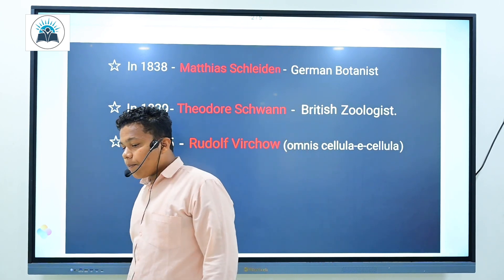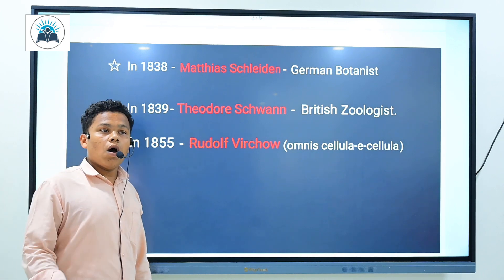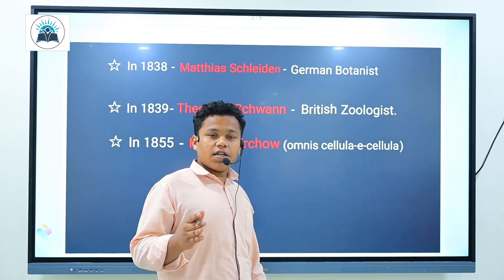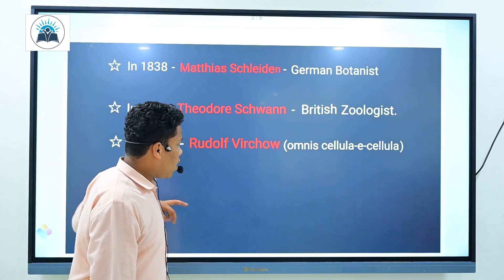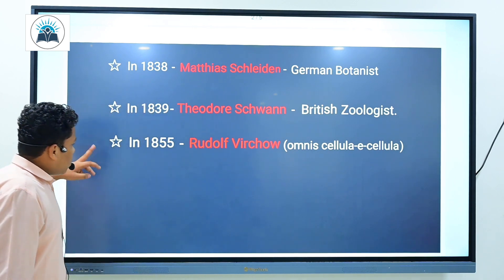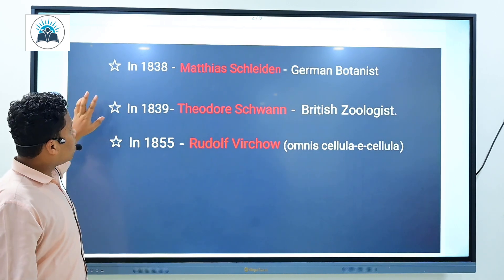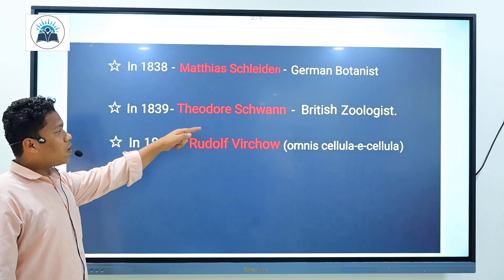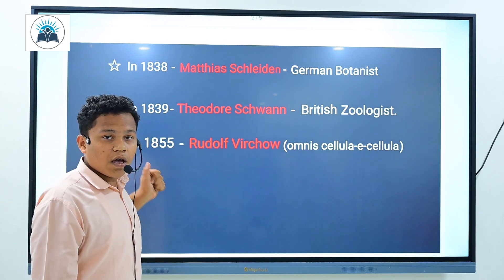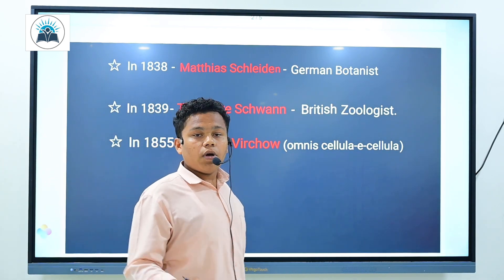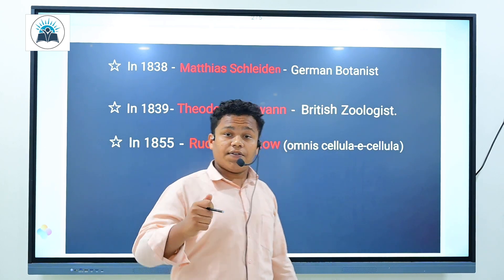Schwann proposed a hypothesis: all living organisms are composed of cells and products of cells. However, Schleiden and Schwann had a drawback, which is they were not able to explain how new cells arise.